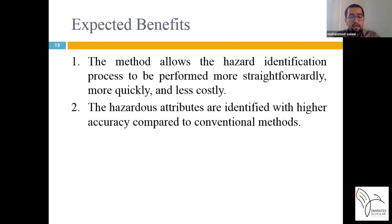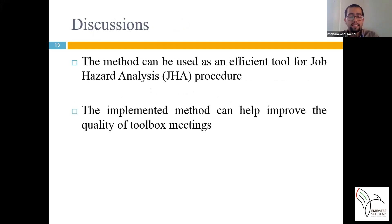Based on the case study implementation and feedback from the project team and safety experts, the method's benefits are as follows. First, 4D BIM made it possible to use computer tools and consequently automate the hazard identification process. Automation allows the process to be performed more straightforwardly, more quickly, and less costly. Second, due to consideration of the relationships between elements and activities, hazardous attributes are identified with higher accuracy compared to conventional methods.